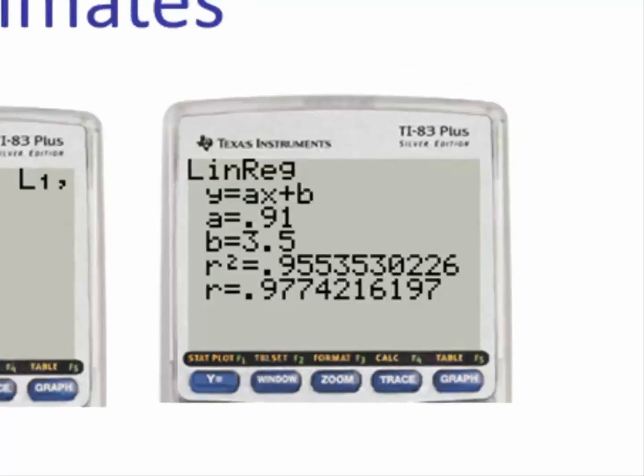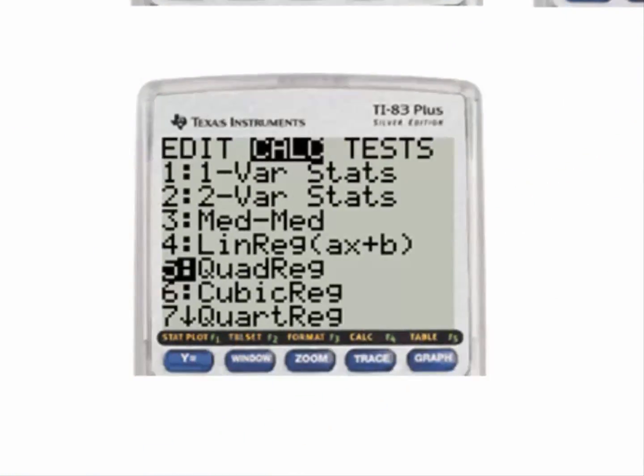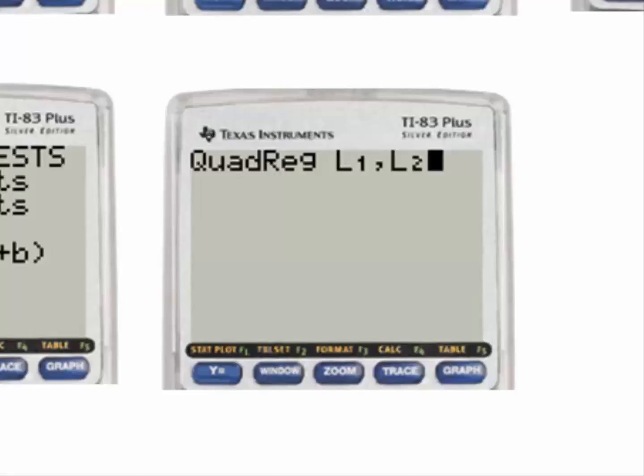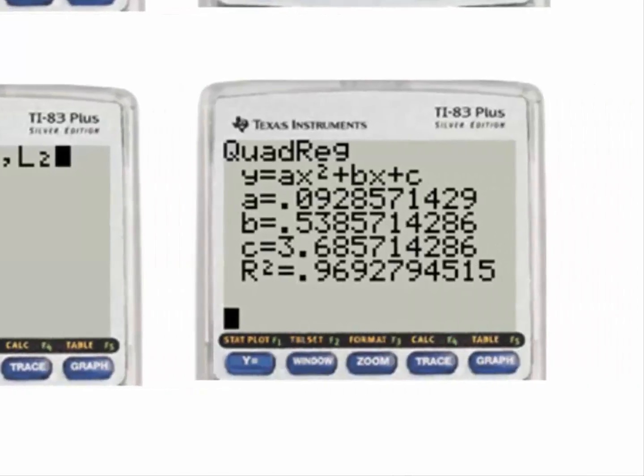To find the quadratic regression, we go to Stat, Calculate, number 5 for quadratic regression. This pastes the command in the home screen. Next hit second and number 1, comma, second and number 2 for list 1 comma list 2. Hit enter and we have our quadratic regression model. The calculator is giving us the values of a, b, and c. And we see that r squared is larger than the linear regression model. R squared is almost 0.97.